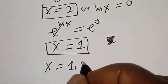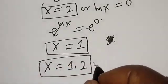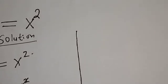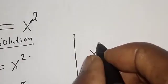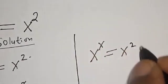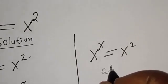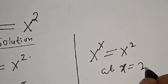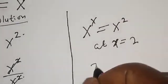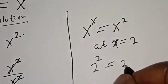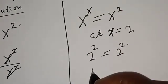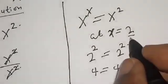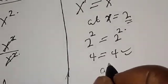Therefore our answers are s is equal to one or two. Let's check to confirm. At s equal to two, we have two raised to power two is equal to two square, and two square is four, which equals four. We satisfy the given equation at s is equal to two.